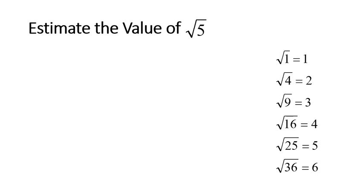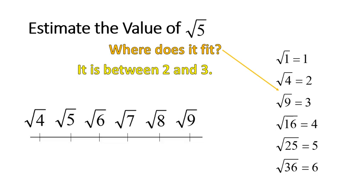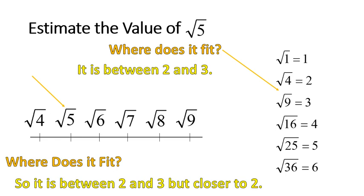Here's an example: estimate the value of the square root of 5. So where does it fit? Looking at our list of perfect squares — the square root of 1, square root of 4, square root of 9 — the square root of 5 fits between the square root of 4 and the square root of 9. That makes sense because 5 is between 4 and 9. So it's between the numbers 2 and 3, because the square root of 4 is 2 and the square root of 9 is 3.